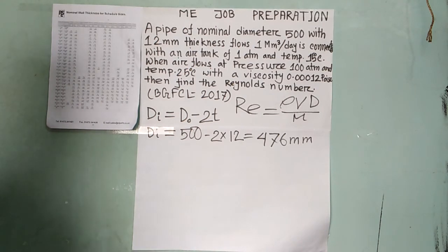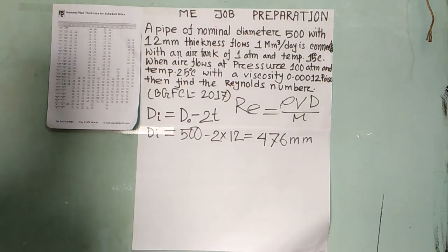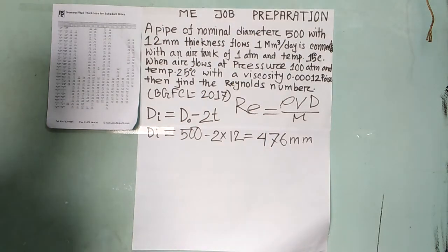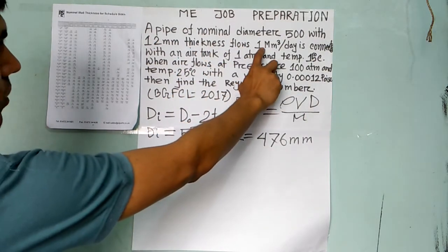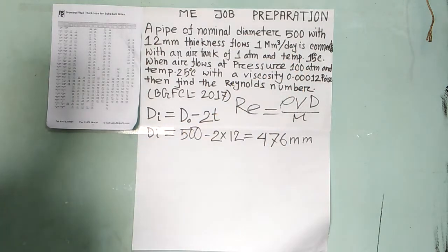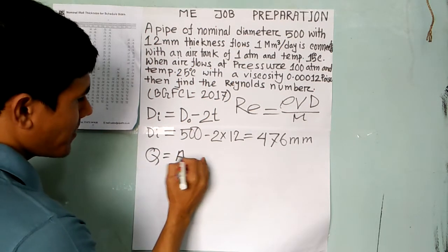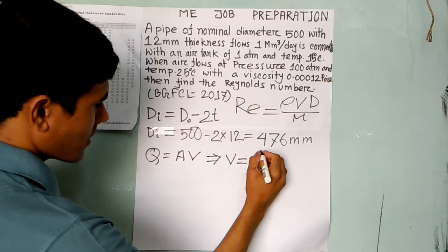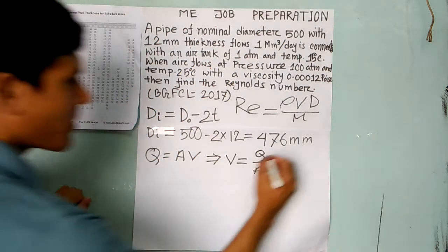There is some confusion here. If someone thinks that pipe schedule calculations are done with respect to nominal diameter, that is not correct. We need to be careful about this distinction.